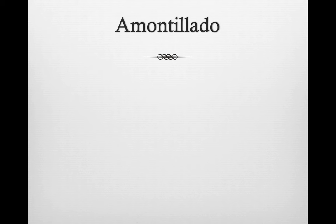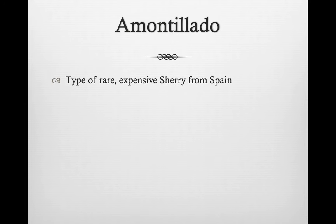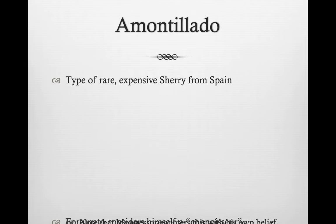We have this central idea of amontillado. Montresor takes Fortunato down into the catacombs to see his amontillado, which is a type of sherry from Spain that's very expensive. Fortunato thinks of himself as a connoisseur, and Montresor does as well. Montresor hatches this revenge plot to take Fortunato down and wall him up in the catacombs — a final revenge for the injuries done to him and his family.